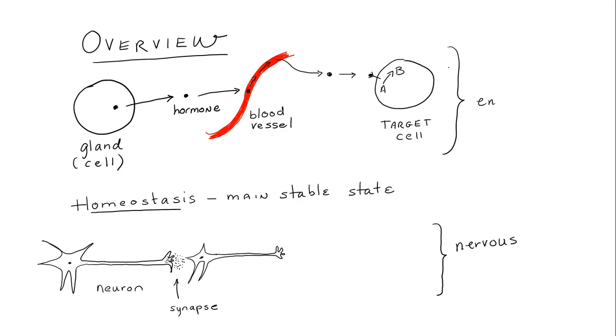So this is the nervous system, but the endocrine system involves hormones moving through the entire bloodstream, binding to a receptor on the target cell, and initiating a series of reactions within that target cell.